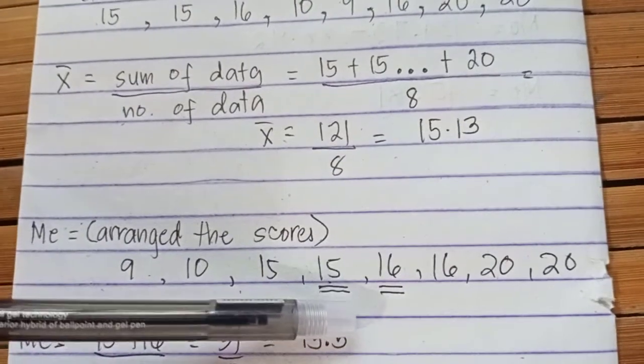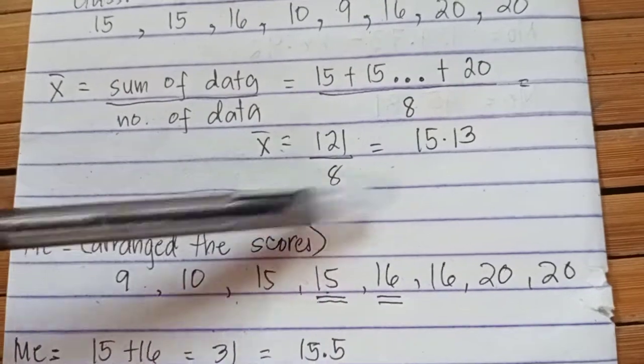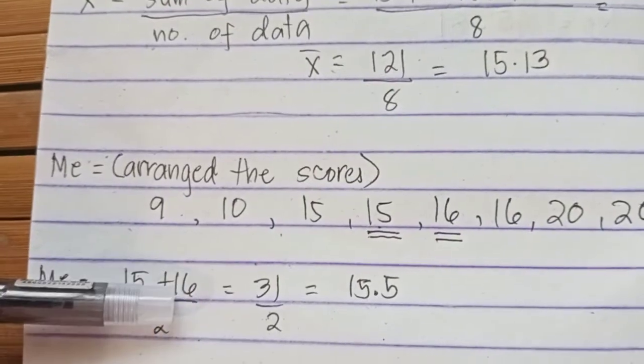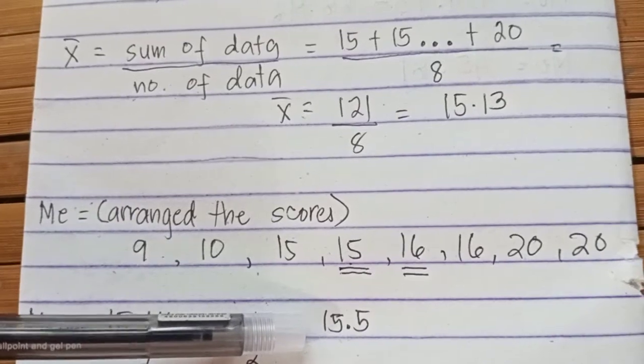The two middle values in this example are 15 and 16. To determine the median, just add 15 and 16 divided by 2. You have 31 divided by 2, so the value of the median is 15.5.